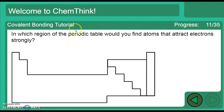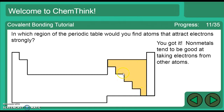The region of the periodic table matters for how strongly atoms attract electrons. Non-metals have the strongest pull on electrons because they're closer to having a full outer shell. They want to be like the noble gases — they're so close that they're going to have a stronger pull on those electrons. That's why covalent bonds occur between non-metals.